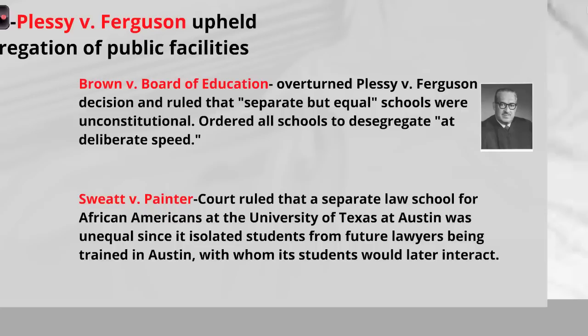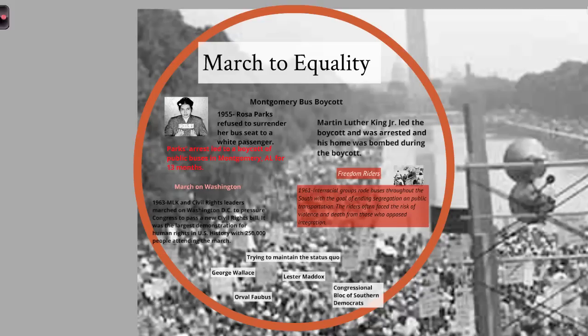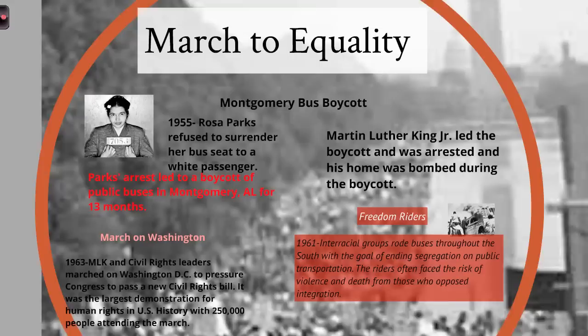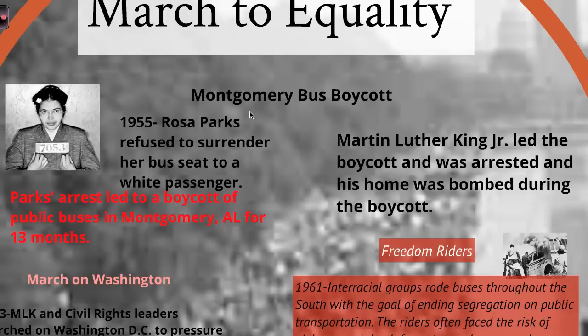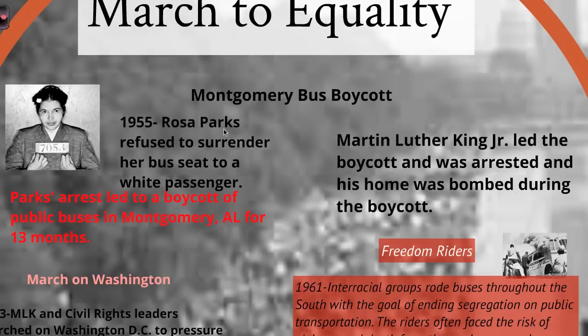Another part of the civil rights movement involved nonviolent boycotts and marches. The Montgomery Bus Boycott began when Rosa Parks, an NAACP member and seamstress, refused to give up her seat for a white passenger and was arrested. Her arrest led to a 13-month boycott of public busing in Montgomery, Alabama, led by local pastor Martin Luther King Jr. African Americans carpooled to get to work; MLK was arrested and his house was bombed, but the boycott continued. Its significance: it showed African Americans could unite successfully to oppose segregation.